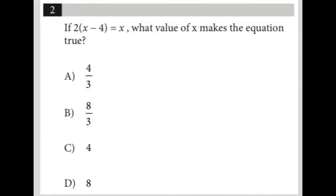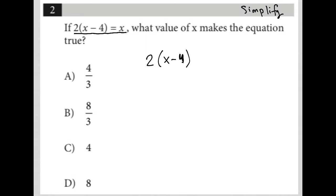This question looks like a simplified question. Simplified questions are between one and three lines long and contain either an expression or an equation. In this case, we have this equation, which I'll just rewrite here: two parentheses X minus four equals X.